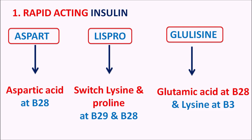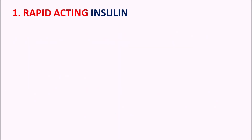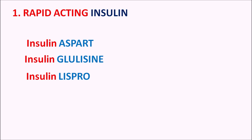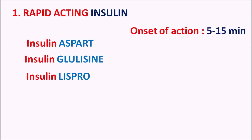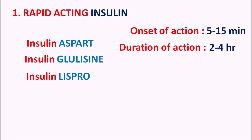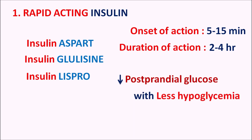These three rapid-acting insulin preparations have an onset of action of 5 to 15 minutes and can be given just before a meal. Their duration of action is 2 to 4 hours. These preparations can reduce postprandial glucose with better efficacy and less hypoglycemic effect compared with regular insulin.